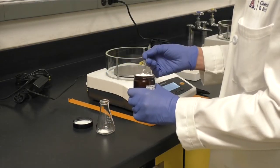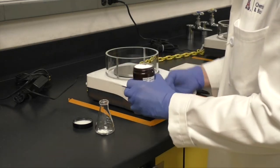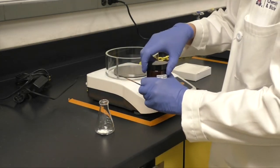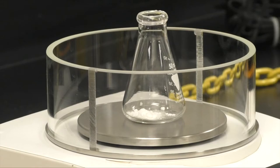Weigh out about 0.5 grams of salicylic acid into a 50 milliliter Erlenmeyer flask. Record the weight.